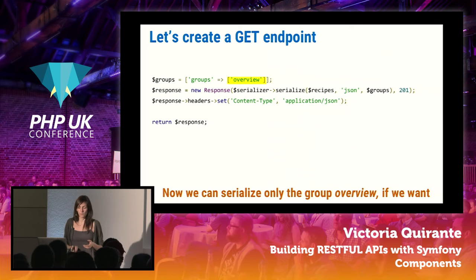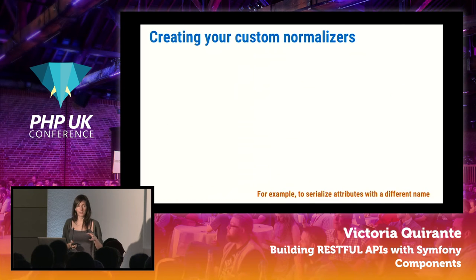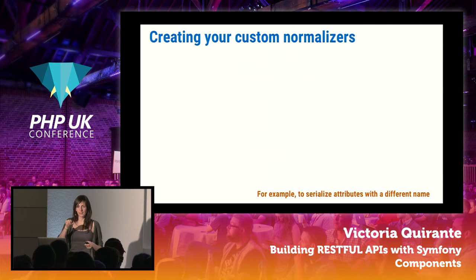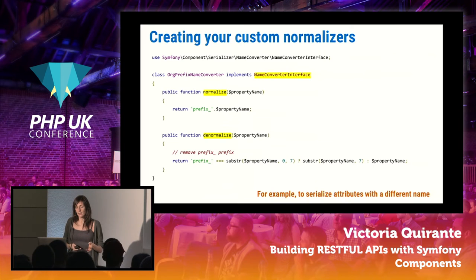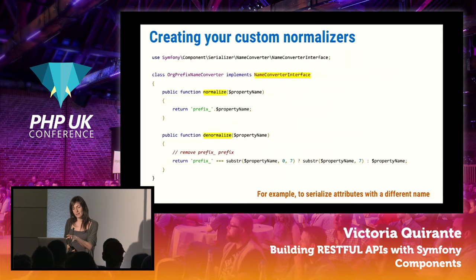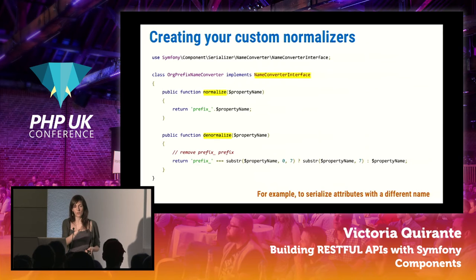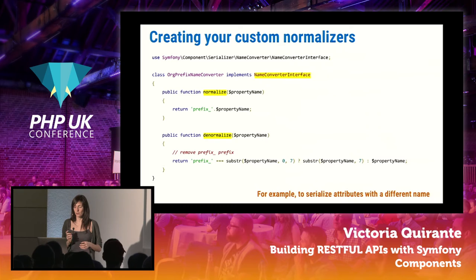Another thing you'll do often with the Serializer is write your own normalizers — this part deals with the transformation between objects and arrays. A simple example is when you want to serialize attributes with different names. You implement the `NameConverterInterface`, which has two methods, `normalize` and `denormalize`. When normalizing, add a prefix; when denormalizing, remove the prefix. With this, you can do whatever you want to transform your representation.